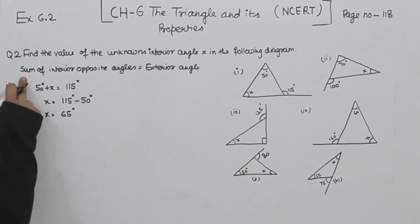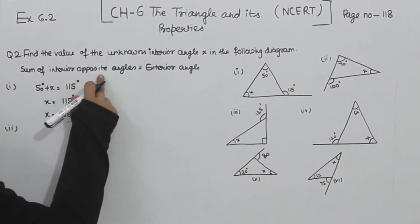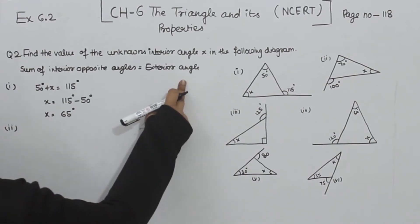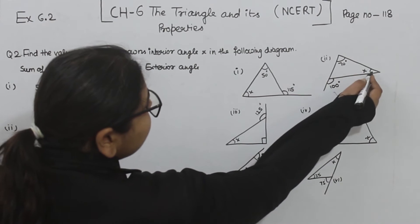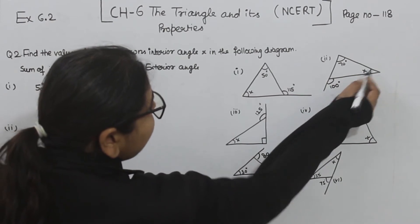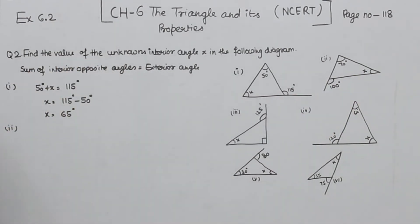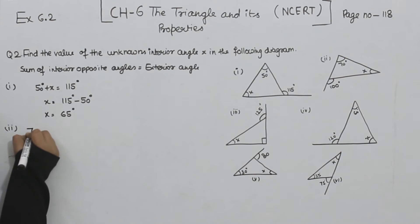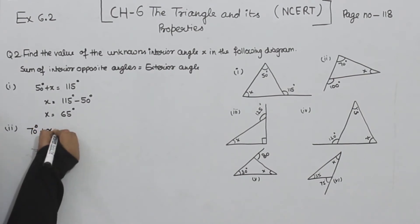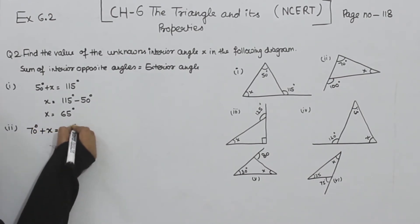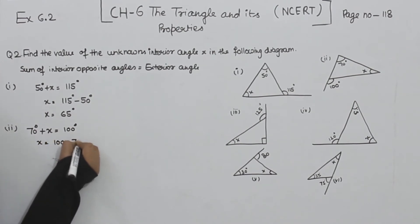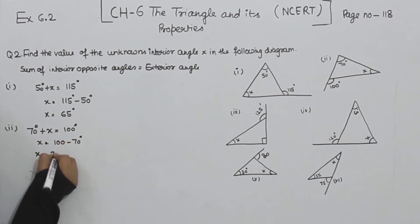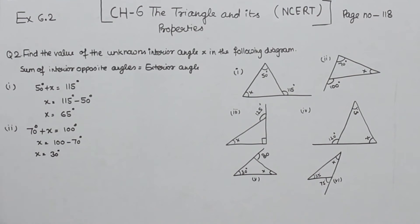Now for part 2: the sum of interior opposite angles is equal to the exterior angle. The interior angles are 70 degrees and x, and the exterior angle is 100 degrees. So 70 plus x equals 100, which gives x equal to 30 degrees.